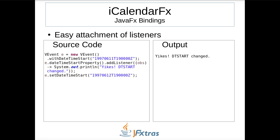This example shows how to attach and fire listeners. I create a simple vEvent and add a DateTimeStart property. I attach a listener that will fire when the DateTimeStart property changes. I change the DateTimeStart in the last statement. When it runs, the listener fires and displays the message to the console.